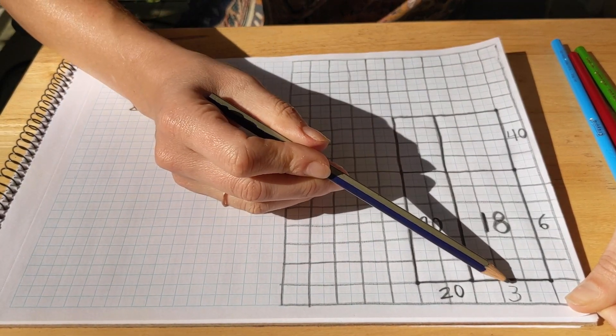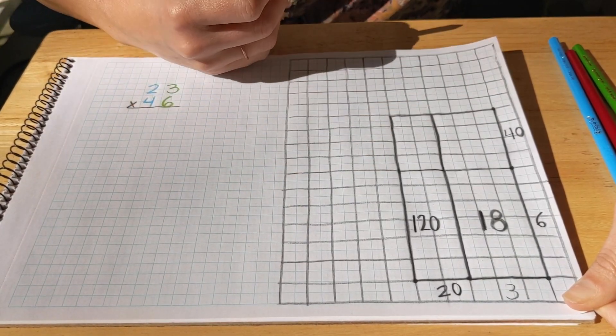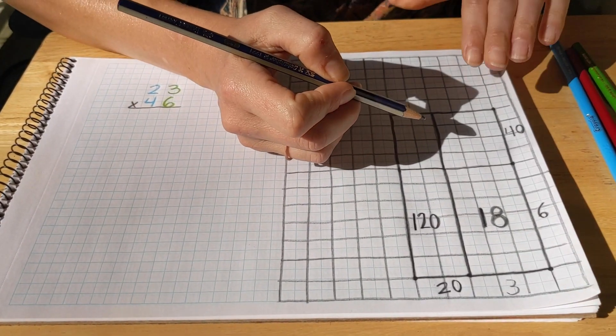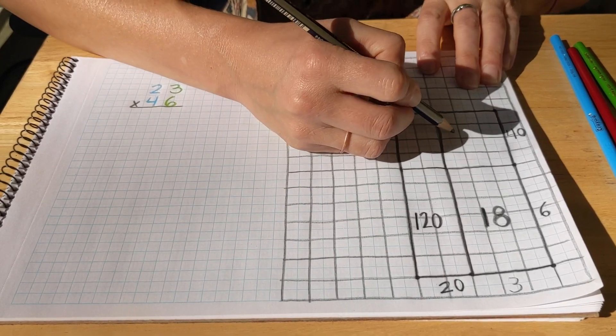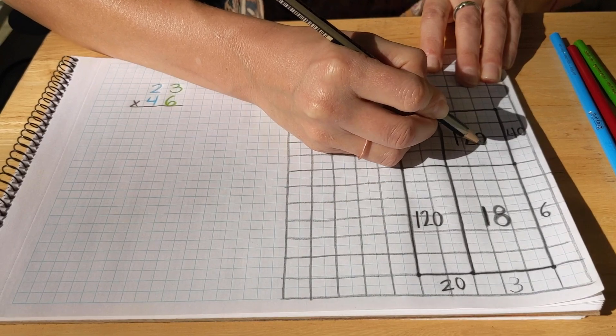Now let's multiply units times tens over here. Three times four is also 12. And we add that zero because we're multiplying by tens. So here we also have 120.